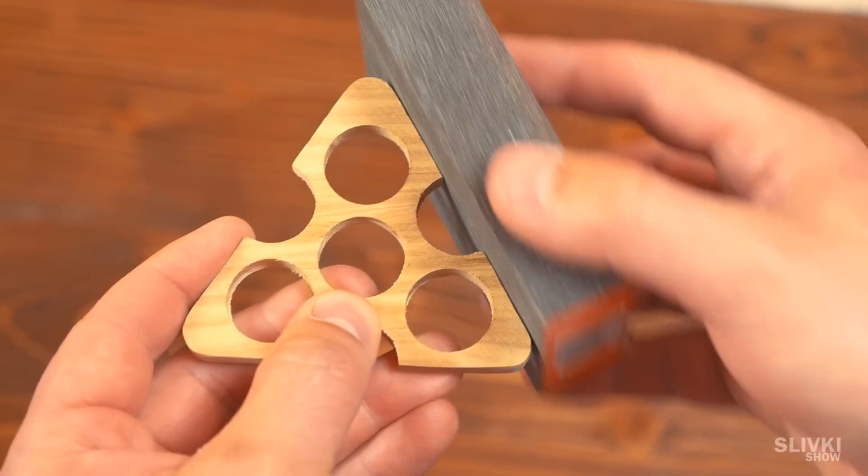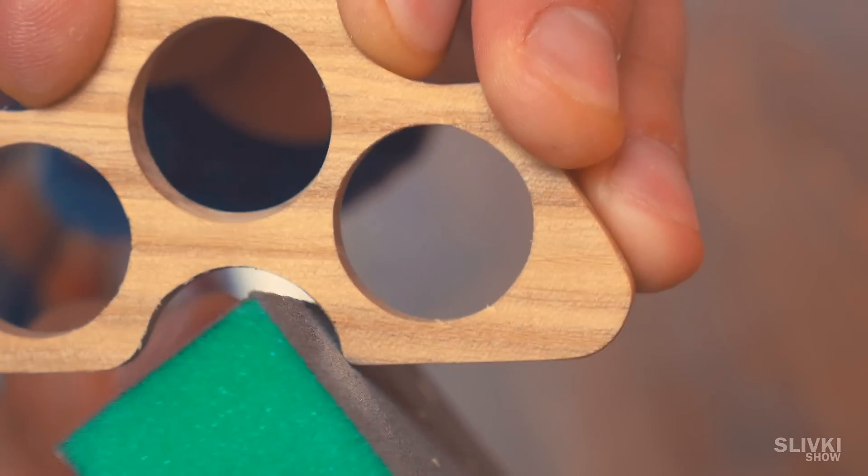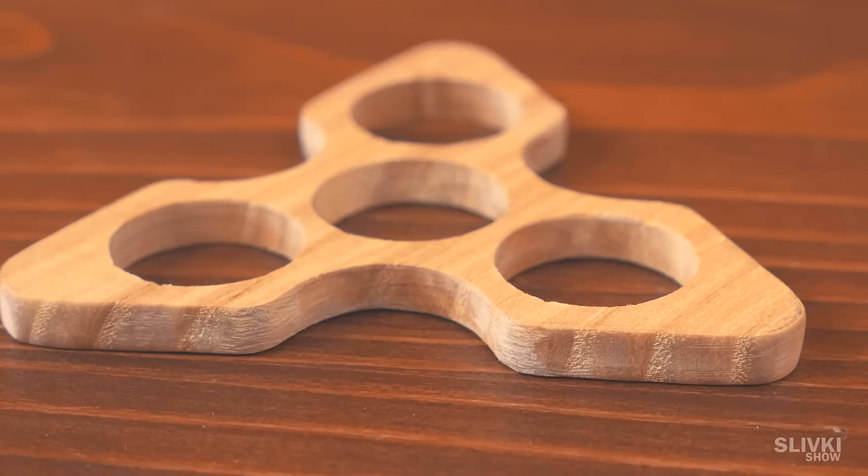If you have a special sponge, use it instead, because it's softer. After this process we've got almost finished spinner.